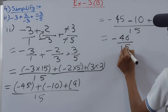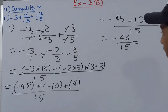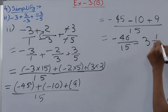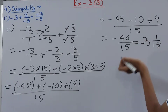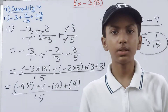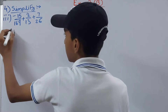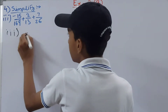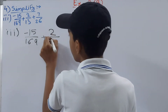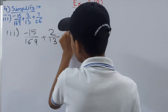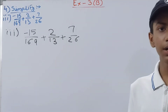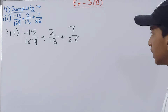Converting -46/15 to mixed form gives 3 whole 1/15 with a negative sign. So the final answer for part two is -3 whole 1/15. Now let's move on to the third part: -15/169 + 2/13 plus the third term.